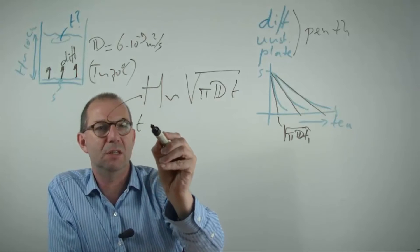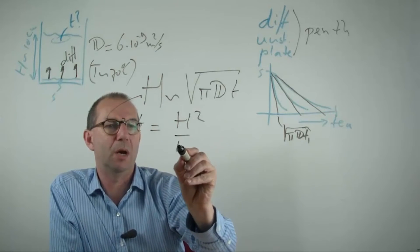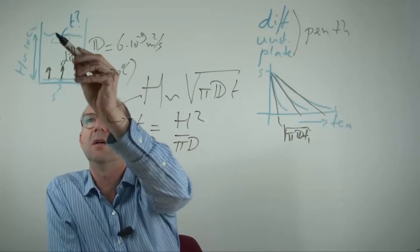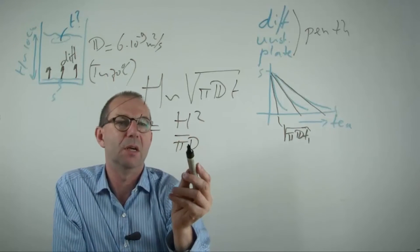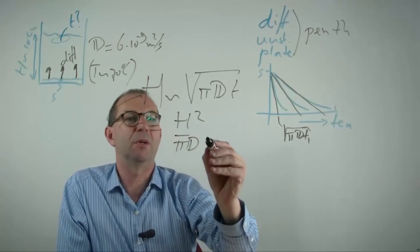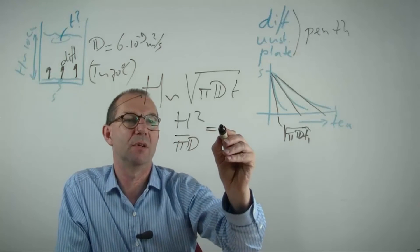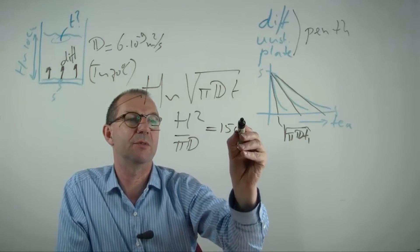This t equals in this estimate h squared over pi d with h 10 centimeter and d given by this number is going to be a very long time. Something like 150 hours.